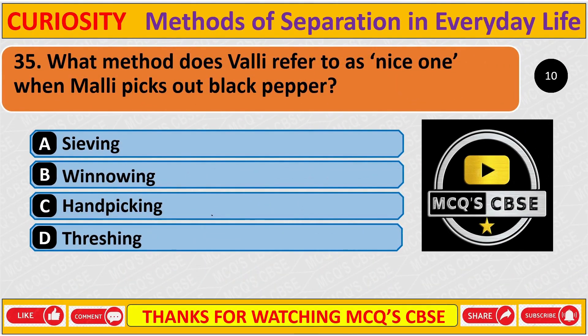Question: What method does Wali refer to as a nice one when Mali picks out black pepper? Correct answer is C: Hand picking.